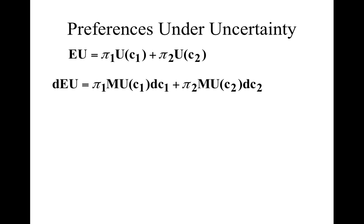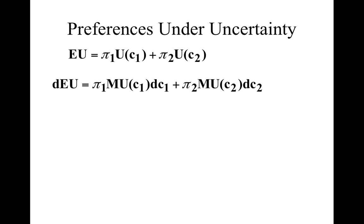Expected utility is given by this line. What we basically do is take the total derivative of this function. It means that we take a small change in C1 and see how the marginal utility changes because of that, and multiply that by the probability of this outcome occurring. Similarly, a small change in C2 — what is the change in marginal utility at that point, multiplied by the probability of that event occurring.